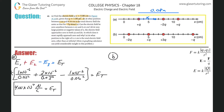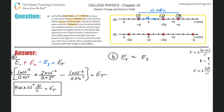We want to find where the total electric field equals the field of just the second charge (negative 2q) alone. Label the charges again as one, two, and three. At this point, charge one (positive) produces E1 pointing to the right — positive direction.